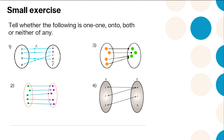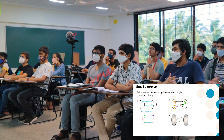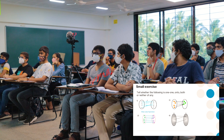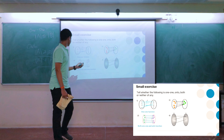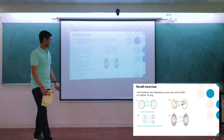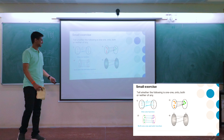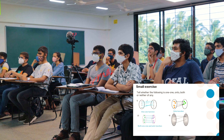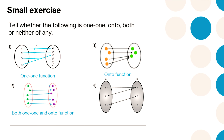Let's do a small exercise — can people say which function is one-one and which is onto? The first one is one-one, correct. The second one is onto. The third one is also onto — you can see it. The fourth one is neither. Coming to the next question: what is the cardinality of natural numbers? Any guesses?